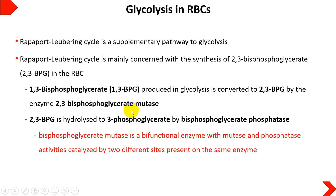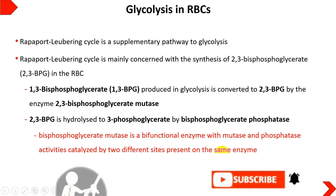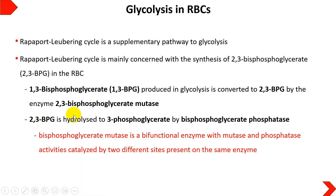Wherever a mutase enzyme is involved in glycolysis, it has an isomerization reaction. In this case, the phosphate group on carbon number 1 of 1,3-bisphosphoglycerate is shifted to carbon number 2, forming 2,3-bisphosphoglycerate. Then, 2,3-bisphosphoglycerate is hydrolyzed to 3-phosphoglycerate by phosphoglycerate phosphatase — a bifunctional enzyme with both mutase and phosphatase activities, catalyzing two different reactions.